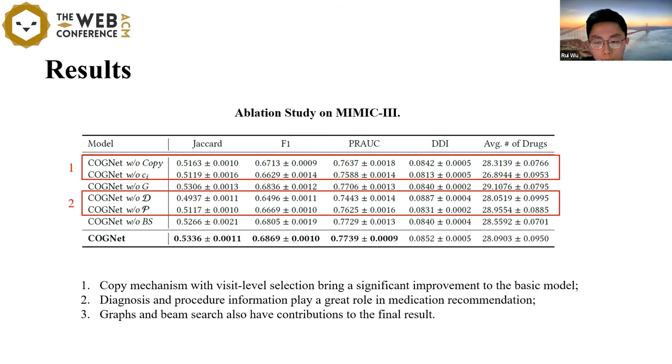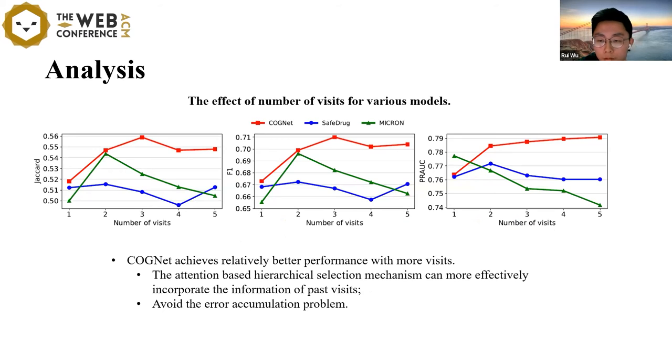It is worth noting that we use the beam search strategy in the inference phase, because it generally has better performance than the greedy strategy. To further explore whether our model can better capture historical medication information, we investigate the impact of the number of visits on the performance of different models. We can see that our model achieved relatively better performance with more visits. The reason may be that COGNet uses the attention-based hierarchical selection mechanism, which can more effectively incorporate the information of past visits and avoid the error accumulation problem.